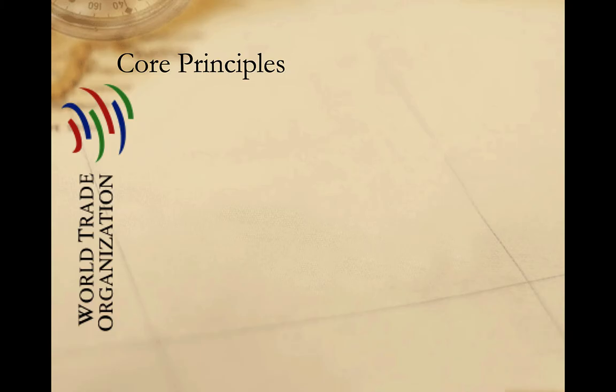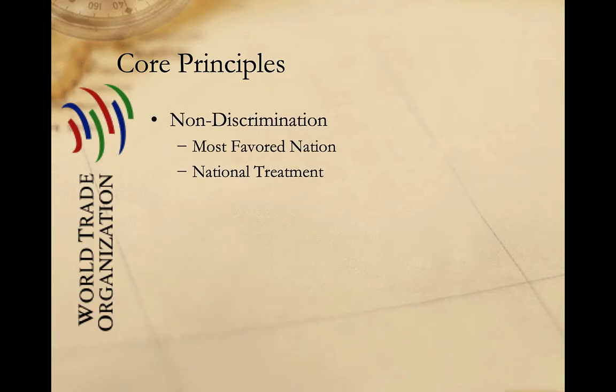The WTO operates according to several key principles which are binding on member states. The first and perhaps most important is the principle of non-discrimination. This principle encompasses two separate but related ideas. The first is most favored nation, or MFN. Most favored nation status refers to the trade status given to your closest trading partners — the lowest tariffs and highest export quotas, for example. Under the rules of the WTO, all member states must be extended most favored nation status by all other members.